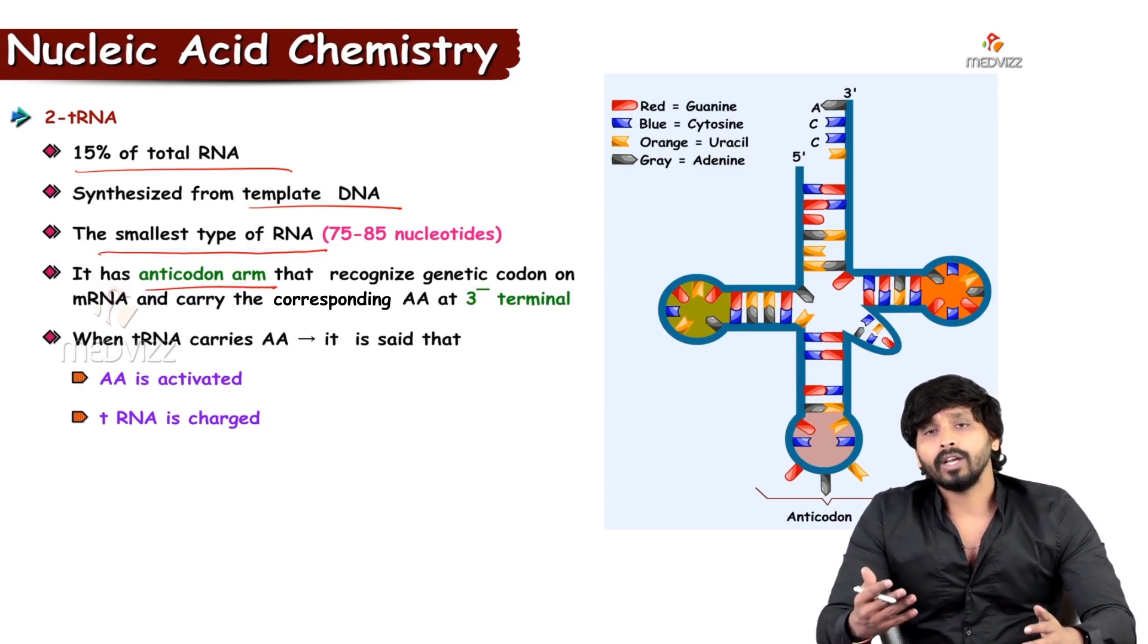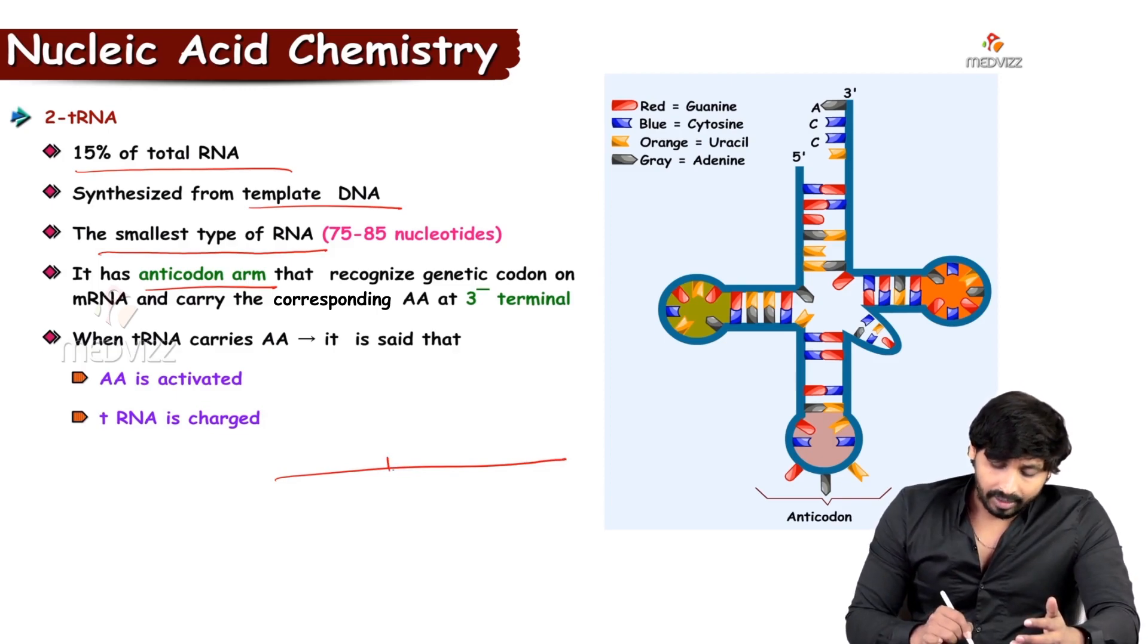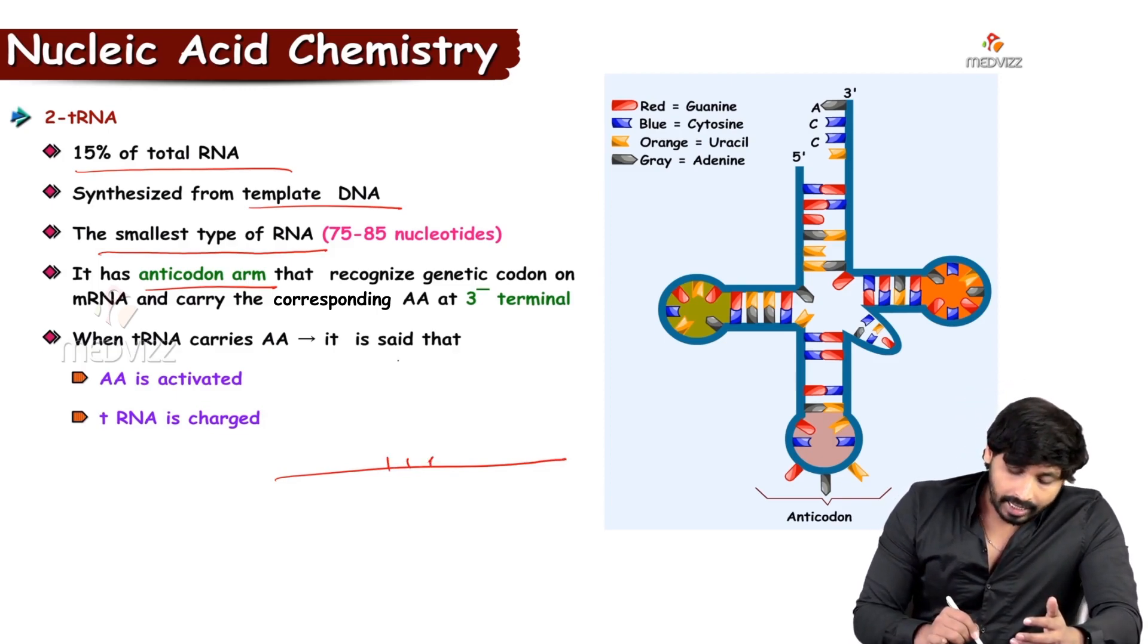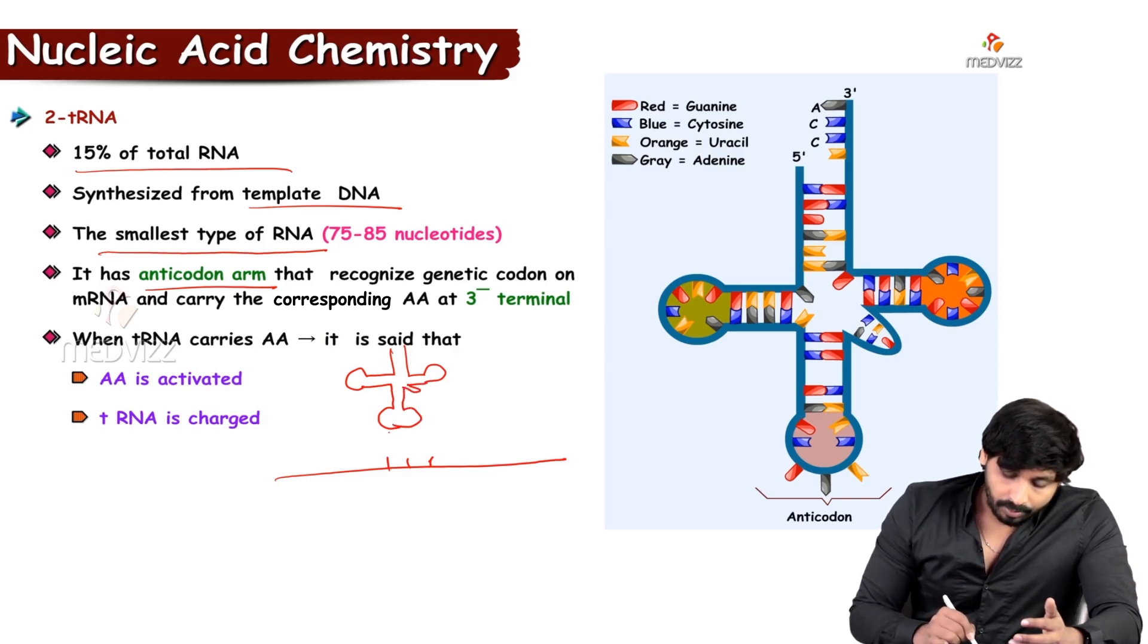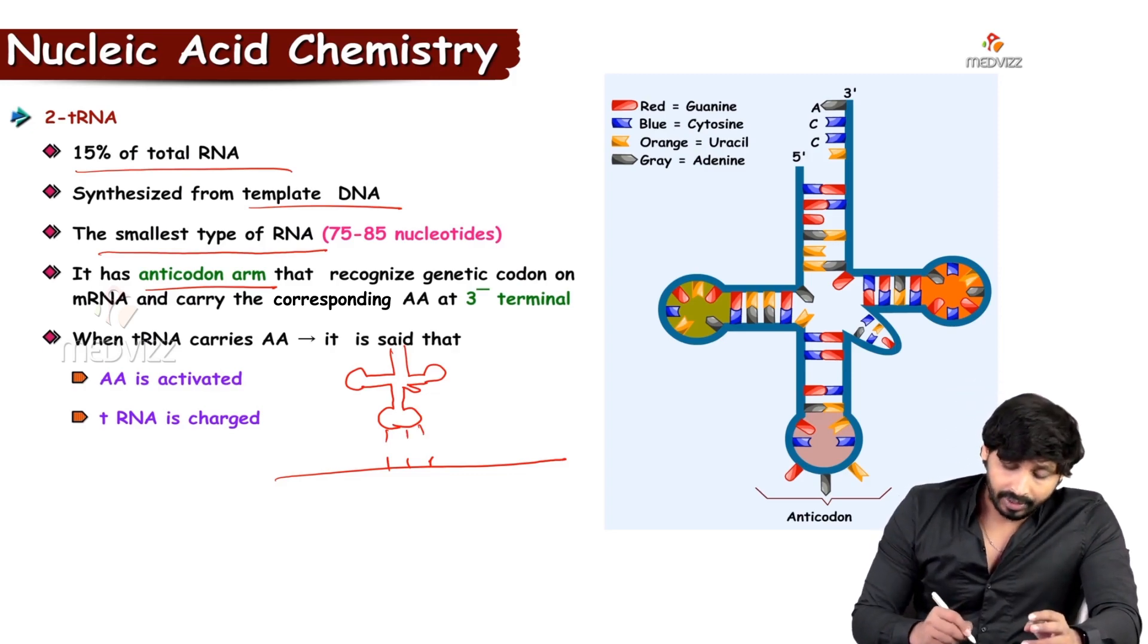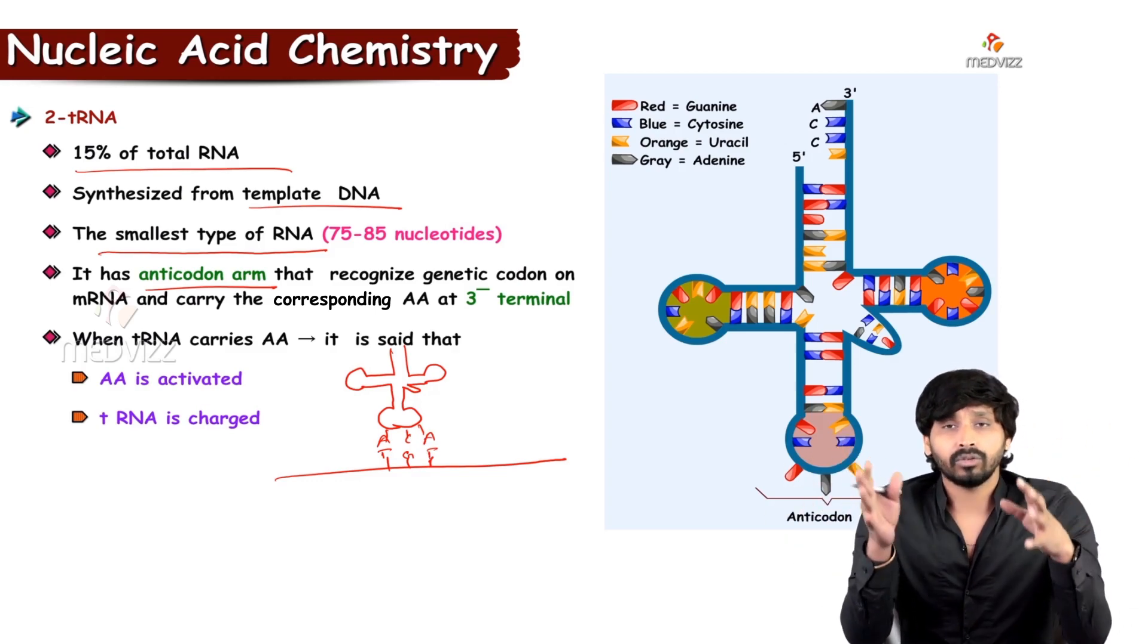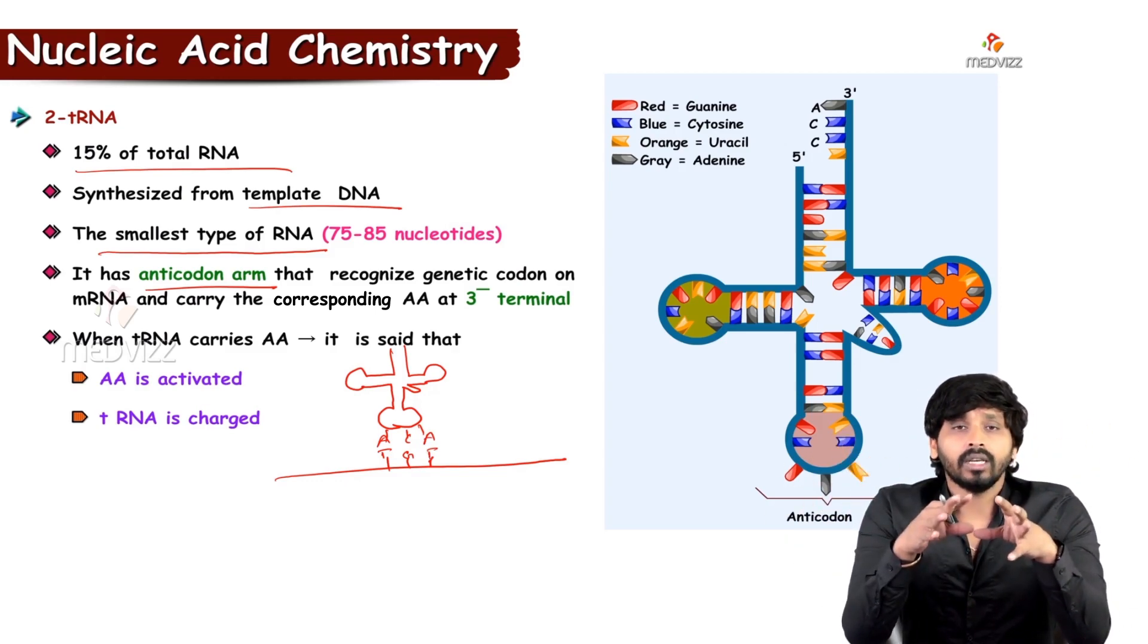What is the function of anticodon arm? mRNA also has 3 bases. When tRNA is coming to bind with this, it is also having 3 codons. If the anticodon in tRNA is having adenine, the codon present in mRNA has to carry thymine. If it is carrying C, it has to be G. If again A, again it is T.